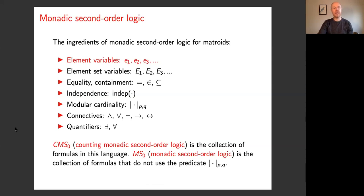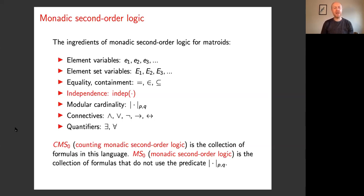You'll end up with ingredients that include a set of variables, where those variables represent elements of the ground set, and then variables that represent subsets of the ground set, and binary predicates that allow you to talk about the relation between those variables. You can talk about two variables being equal, an element being contained in a subset, or one subset being a subset of another. Because we're talking about matroids, we need some way of talking about matroid properties, so we do that with an independence predicate — a unary predicate that takes a subset variable as input and returns a truth value of true if that subset is independent in the matroid.